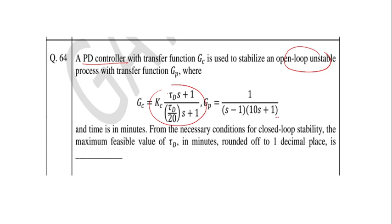With transfer function G_P, G_P is the process transfer function. Time is in minutes and we will find out the necessary condition for closed-loop stability. The maximum feasible value of tau_d in minutes, that we will find out.